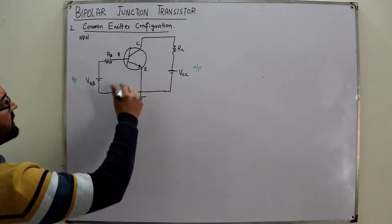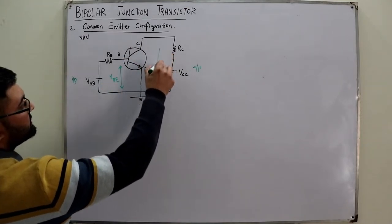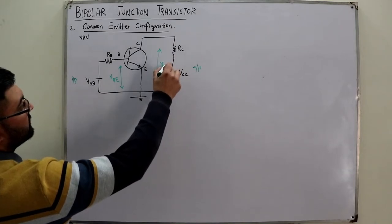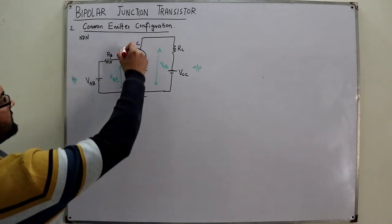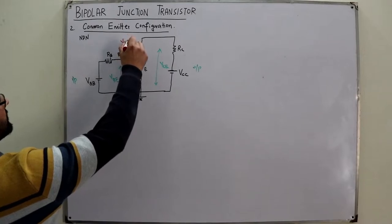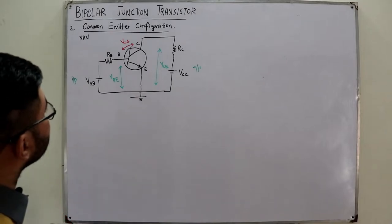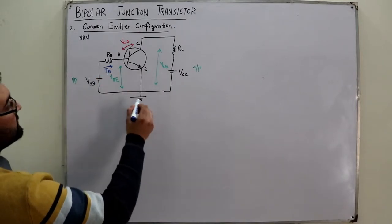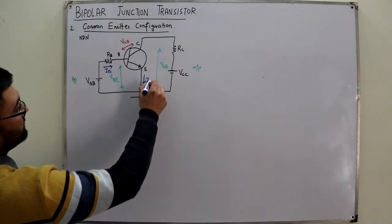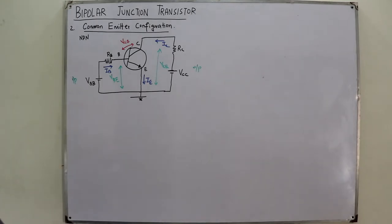VBE is the base-to-emitter voltage, VCE is the collector-to-emitter voltage, and you can also have VCB or VBC depending on the larger value. For the current directions with an NPN transistor: IB flows into the base, IE flows out of the emitter, and IC flows into the collector.